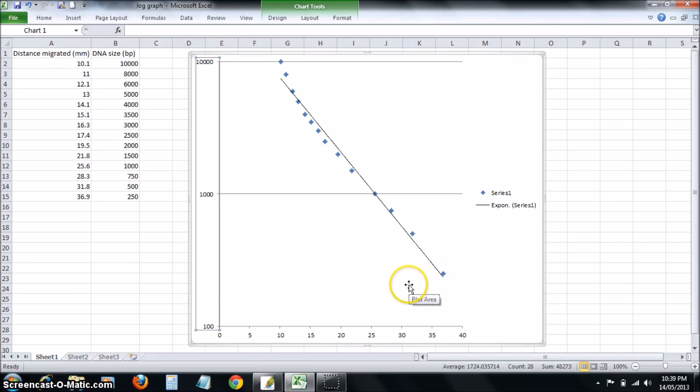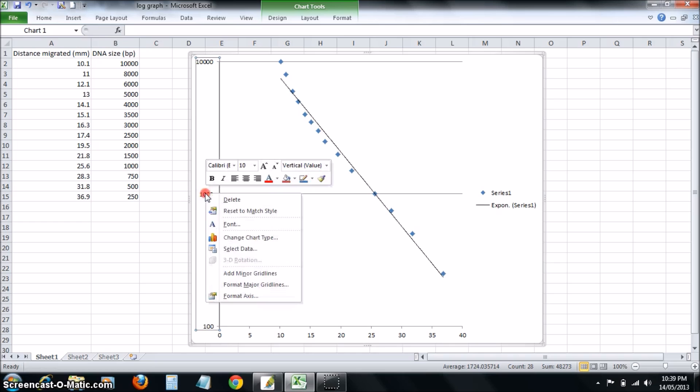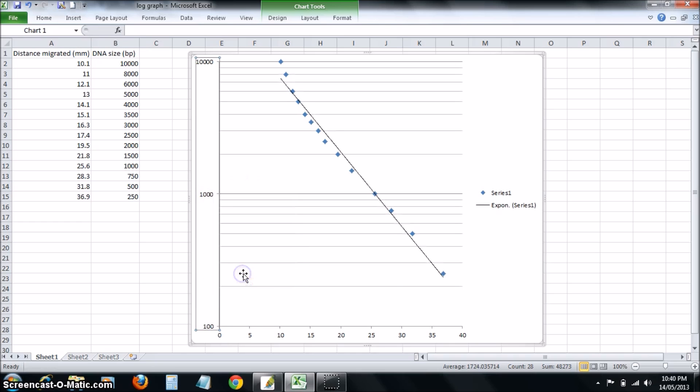To make this even more useful, you should add more grid lines. Right click, add minor grid lines. What you see here is a logarithmic set of grid lines where down the bottom we've got 100.